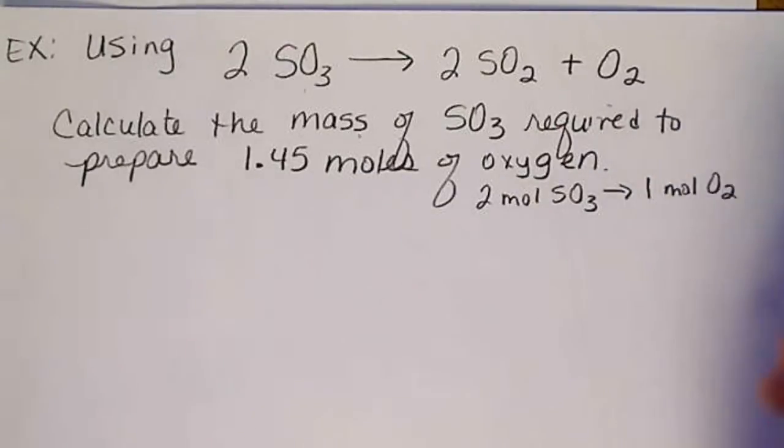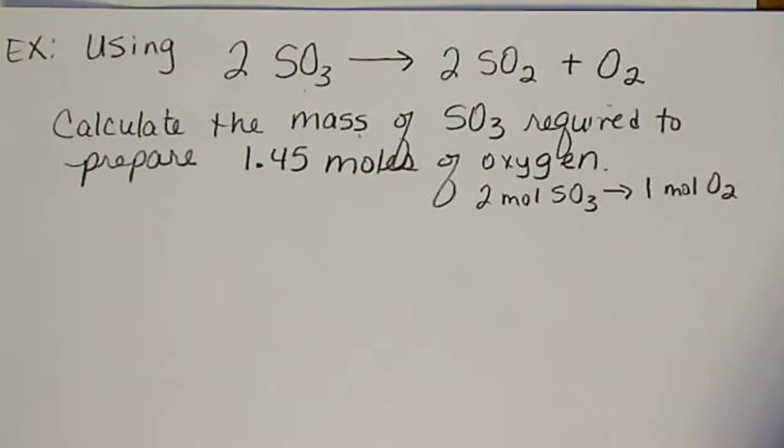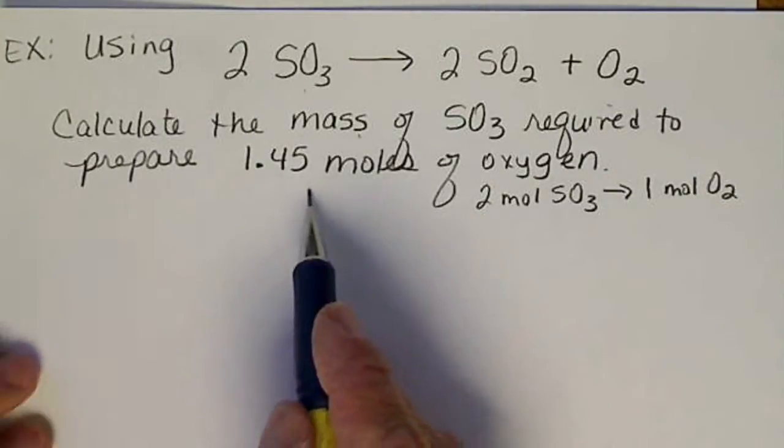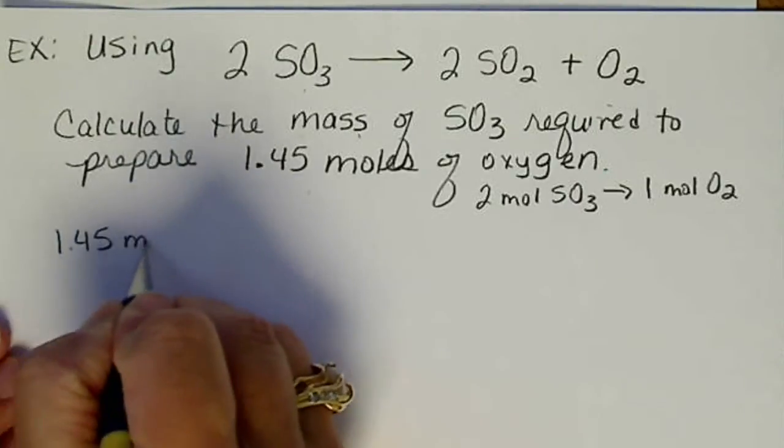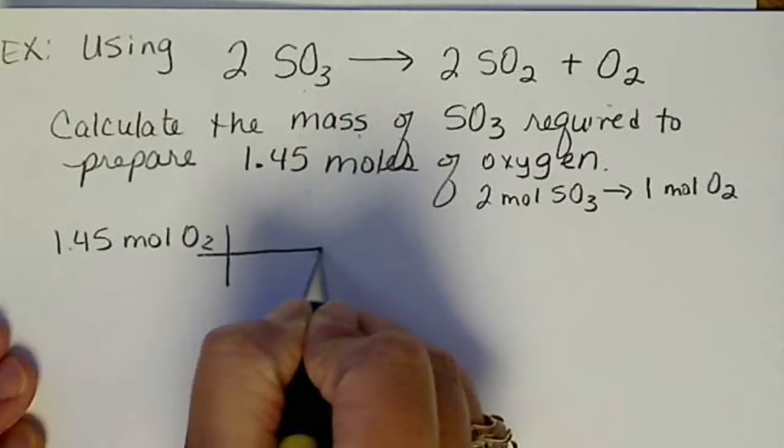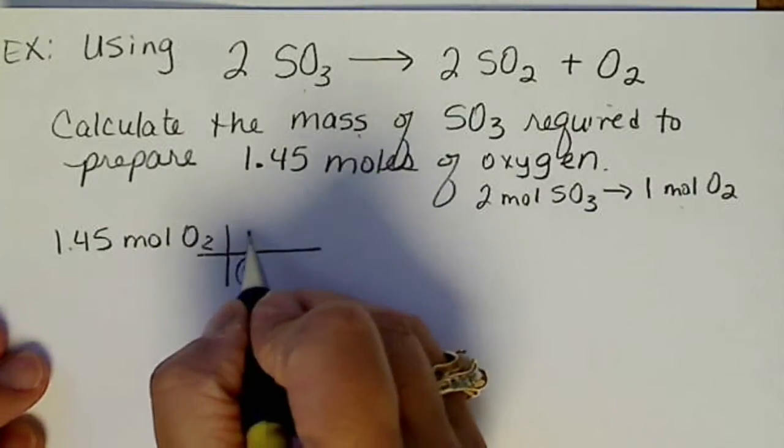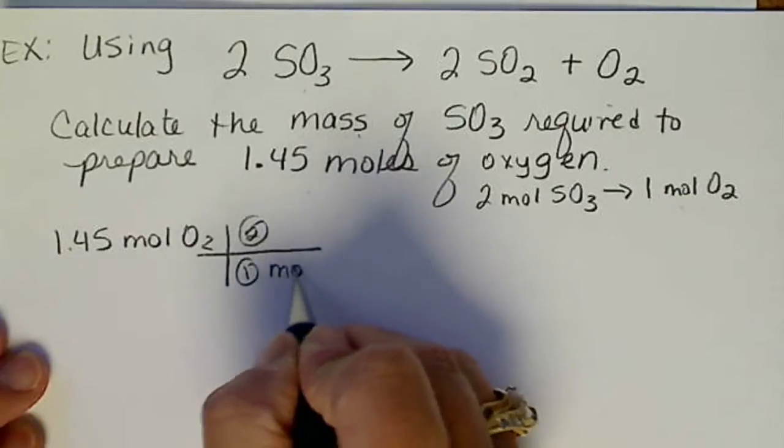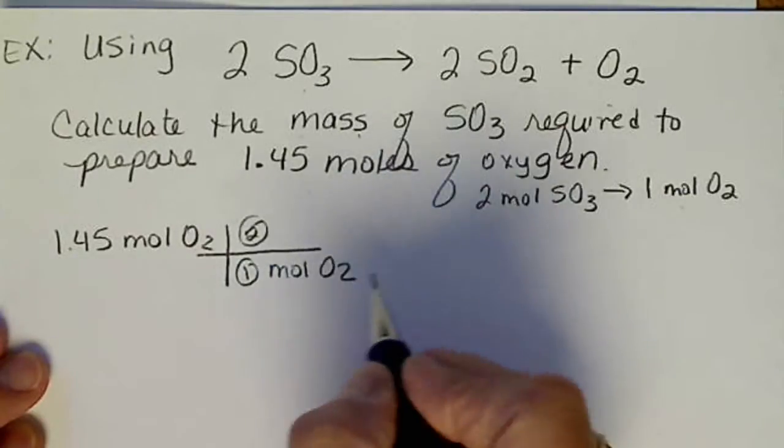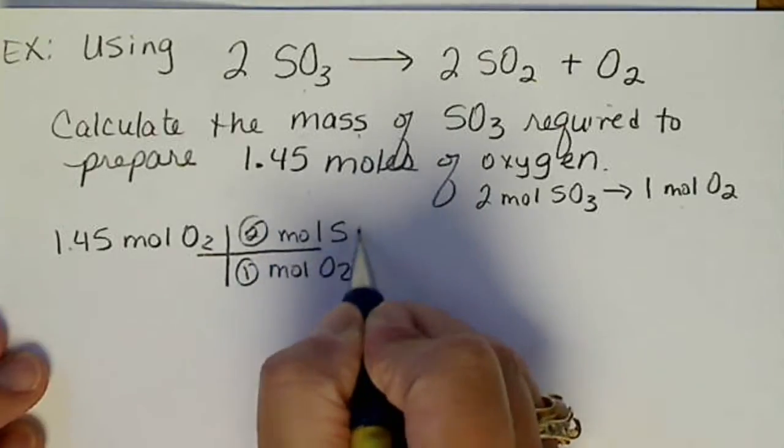So if we take our given 1.45 moles of O2, and then we go straight to the balanced equation, so that's 1 to 2. So 1 mole of O2 for every 2 moles of SO3.